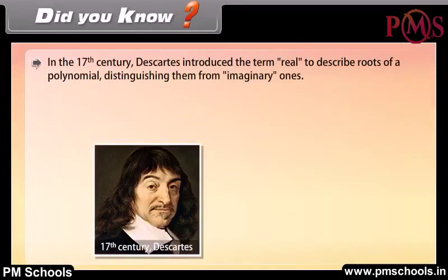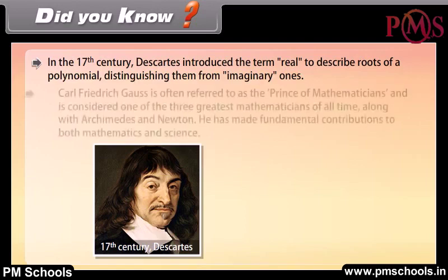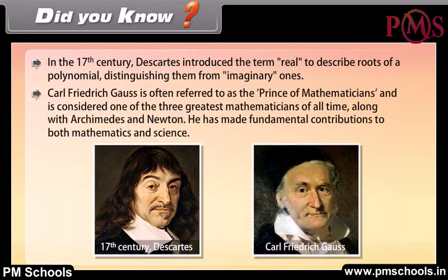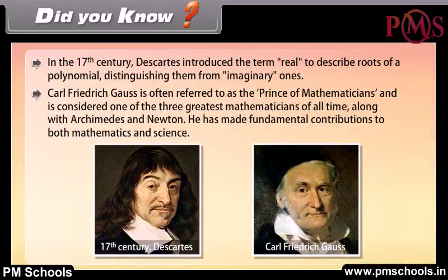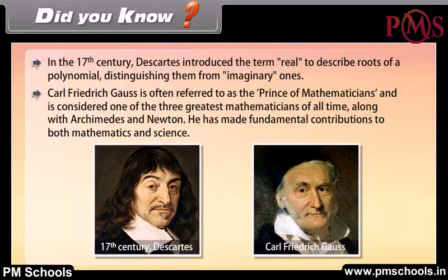Did you know? In the 17th century, Descartes introduced the term 'real' to describe roots of polynomials, distinguishing them from imaginary ones. Karl Friedrich Gauss is often referred to as the Prince of Mathematicians and is considered one of the three greatest mathematicians of all time, along with Archimedes and Newton. He made fundamental contributions to both mathematics and science.